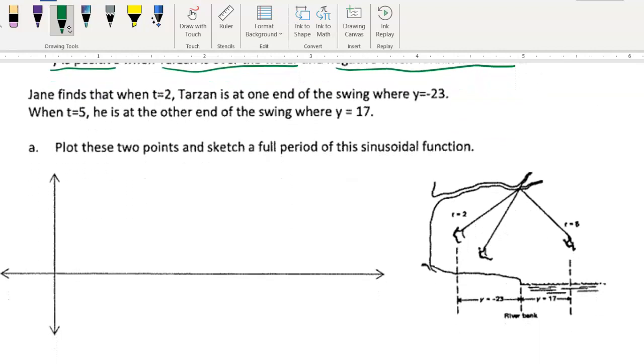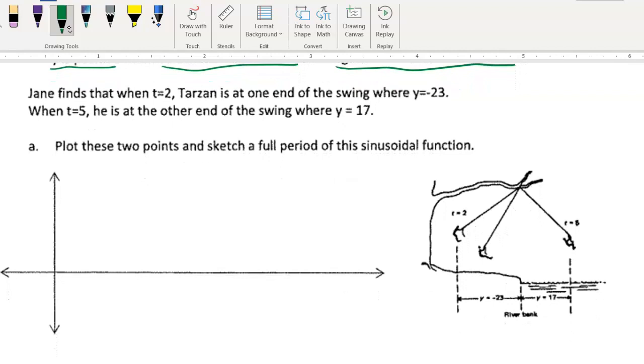All right, so Jane finds that when T equals 2, so after two seconds Tarzan is at one end of the swing where Y is negative 23. When T equals 5, he is at the other end of the swing where Y is 17. Plot these two points and sketch a full period of the sinusoidal function.